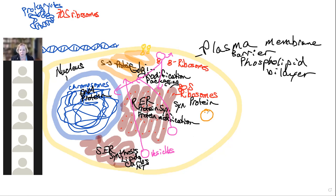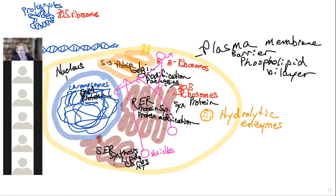There is a specialized vesicle that is important — it is full of hydrolytic enzymes, and we call it the lysosome. All of these membranous structures — the ER, Golgi, vesicles — are called organelles, meaning 'little organs.' It's like the cell is a body with little organs inside it.